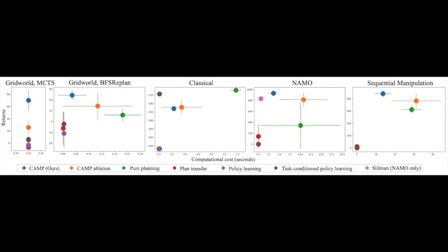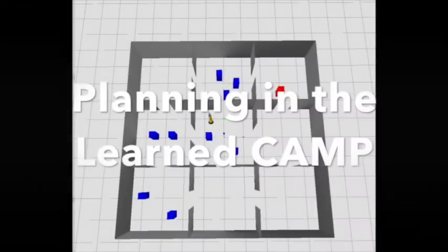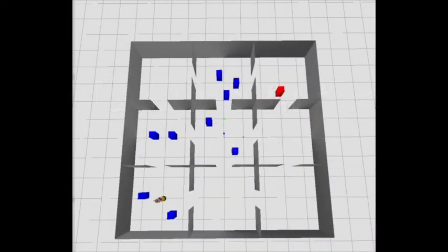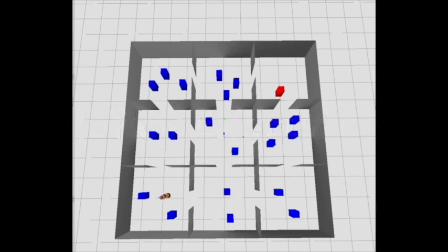In experiments, we evaluate this reward compute trade-off for CAMPs and baselines on five planners in four domains. We find that CAMPs consistently outperform baselines in terms of this trade-off. In the NAMO domain, CAMPs readily identify good constraints to impose and variables to drop, resulting in fast planning and high returns.